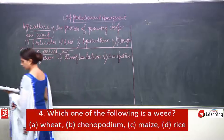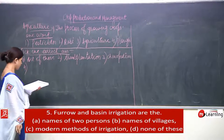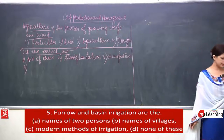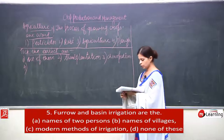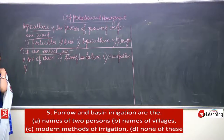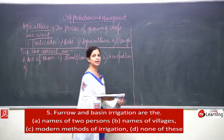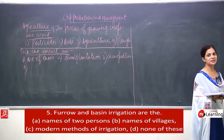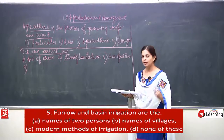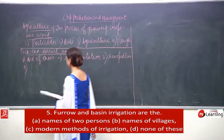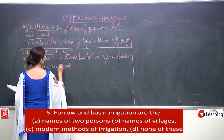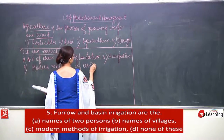Number 4: furrow and basin irrigation are — names of two persons? Names of villages? Those are funny options. Obviously the correct answer is modern methods of irrigation. It is not the name of any villager or person.